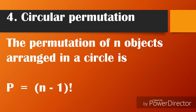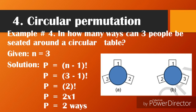Number four: Circular permutation. The permutation of n objects arranged in a circle is P = (n − 1)!. Example number 4: In how many ways can 3 people be seated around a circular table? Given n = 3, we substitute into the formula: P = (3 − 1)! = 2! = 2 × 1 = 2 ways.